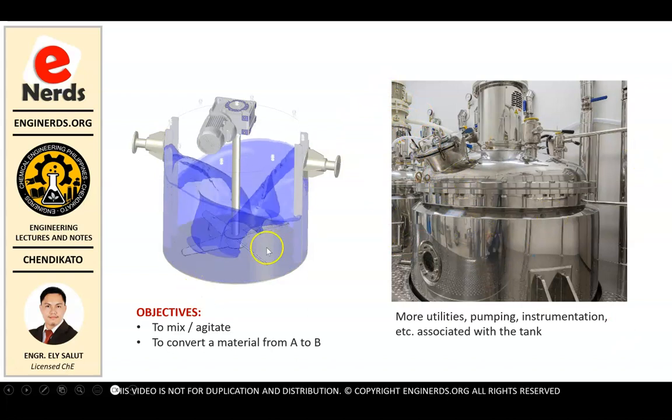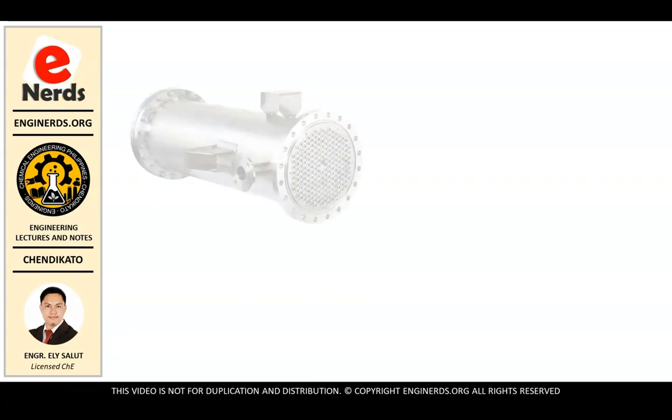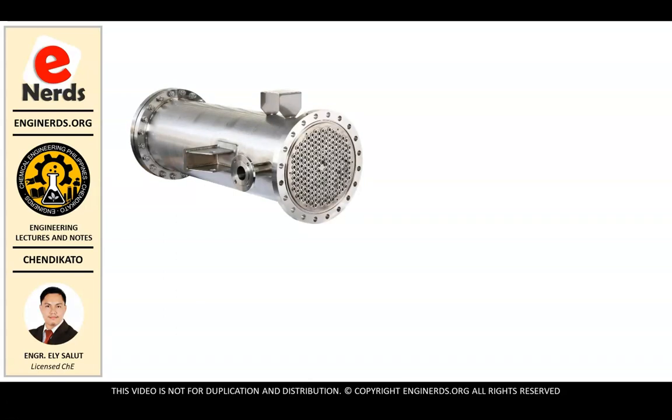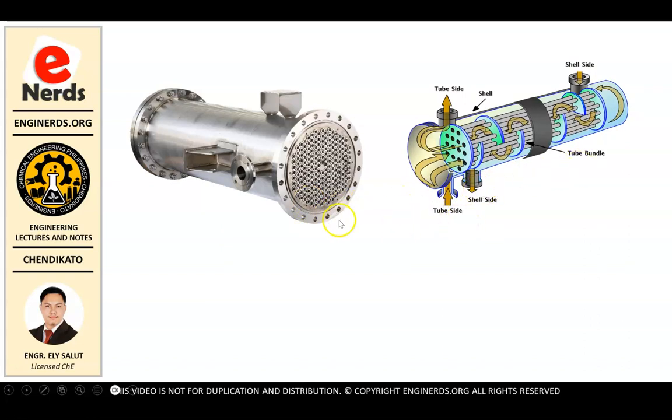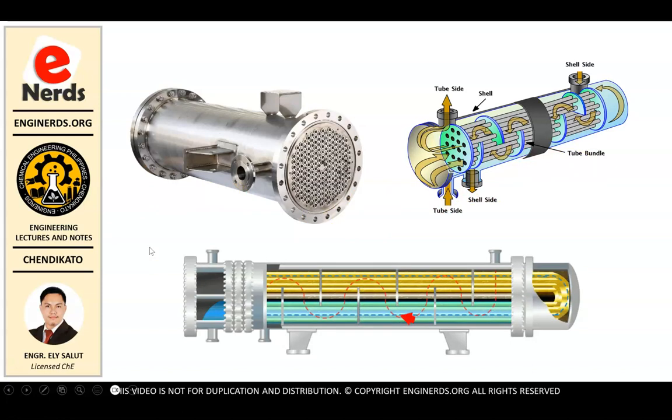Also we have like this which you may have seen in books or on the internet or YouTube. This is not an ordinary pipe. This is actually a shell and tube heat exchanger. It operates like what you can see on this animation here. We have two fluids flowing in different directions, so when they come into contact through the pipings, there is an exchange of heat. That is why it is called a heat exchanger.